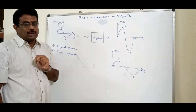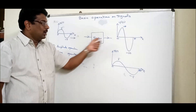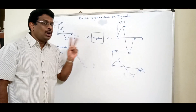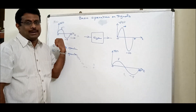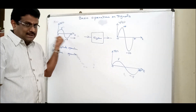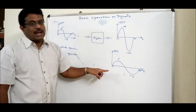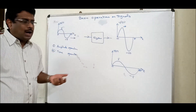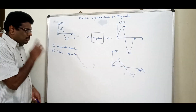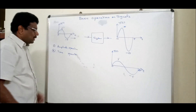So the system can do two basic operations: one is work on amplitude and the other is work on time. The two basic operations on a signal by the system are amplitude operation and time operation. These can occur individually or sometimes both can come together at the same time.